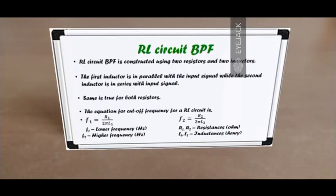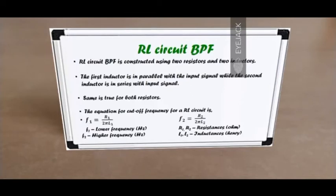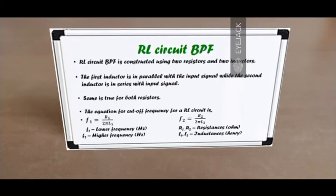Let's look at another type — the RL type bandpass filter. An RL circuit bandpass filter is constructed using two resistors and two inductors. Similar to the RC type, the first inductor is in parallel with the input signal while the second is in series, and the first resistor is in series while the second is in parallel. The equation for cutoff frequency is F = R / (2π × L). There are two frequencies — the lower and higher cutoff — each dependent on specific resistance and inductance values. Resistances are in ohms, inductances in henrys, and frequency in hertz.